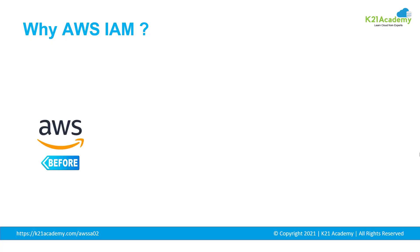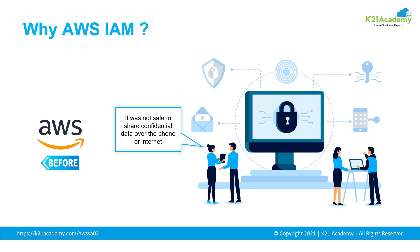Now let's talk about how things went before AWS. Before IAM in general, it was not that safe in a corporate to share the password over a phone or through email. That was the practice that existed at that time. We can all remember those days when we needed to switch to a different account, or we had just one admin password commonly stored in a location, or one person would reset and maintain it — and when we needed to log in, we'd call that person and ask for the admin password over the phone.